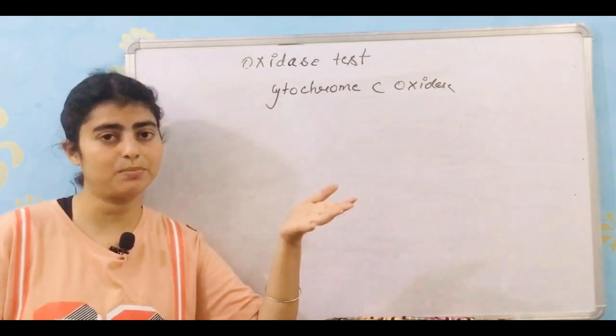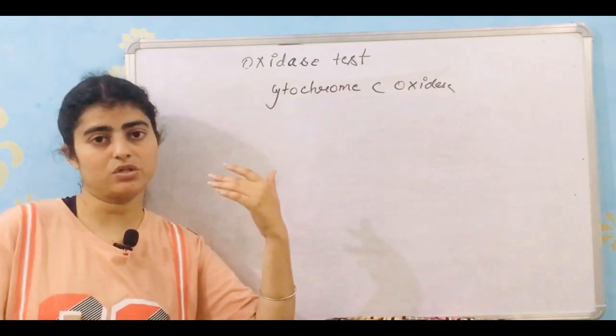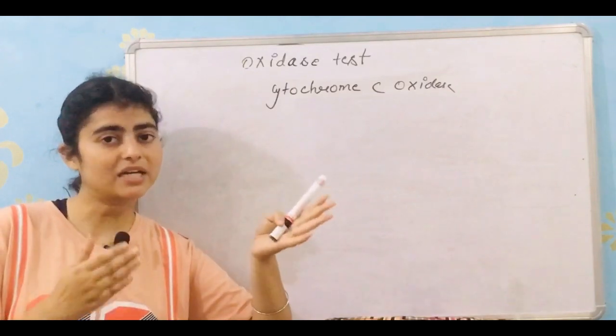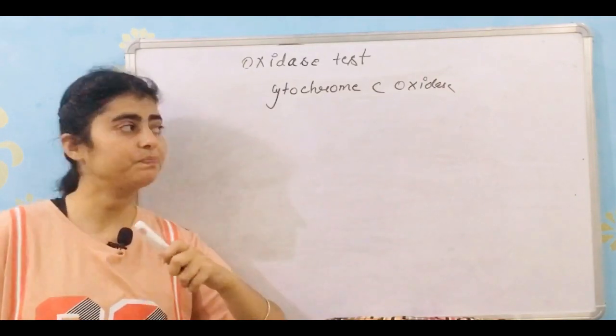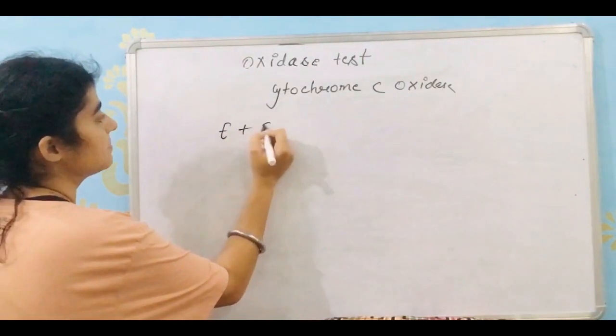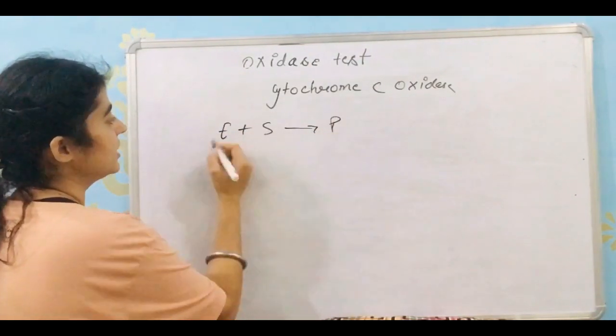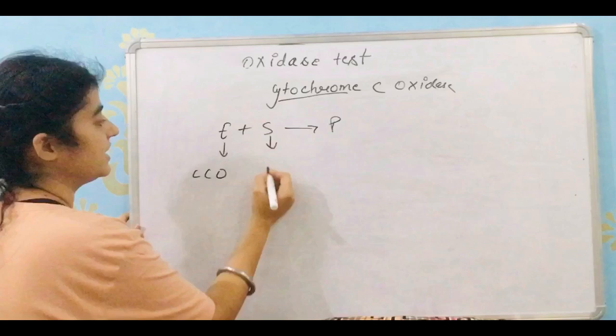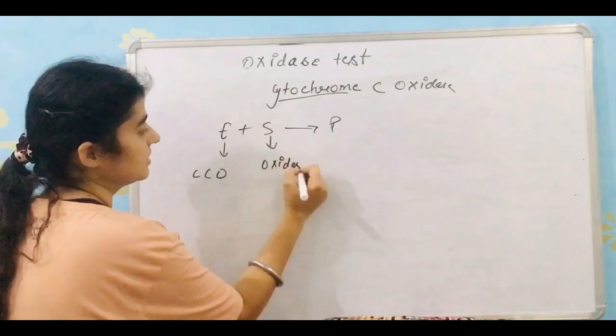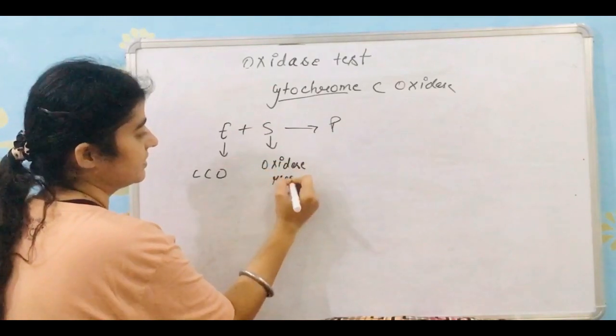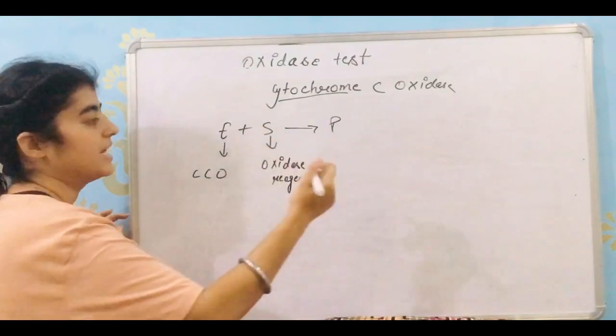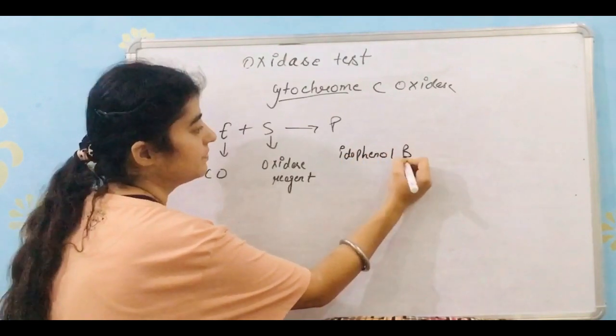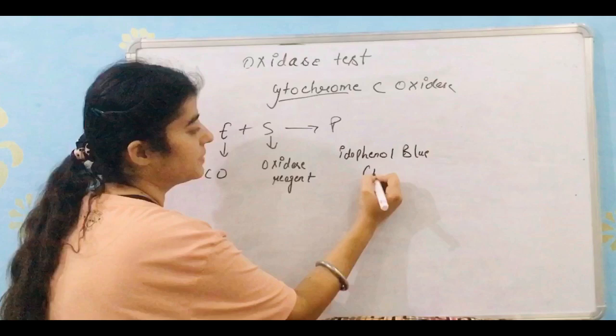So how will we detect whether the bacteria produces oxidase or not? For detecting, we have some artificial substrate. Enzyme reacts with substrate to produce the product. So here our enzyme is CCO, cytochrome C oxidase, and the substrate is oxidase reagent.